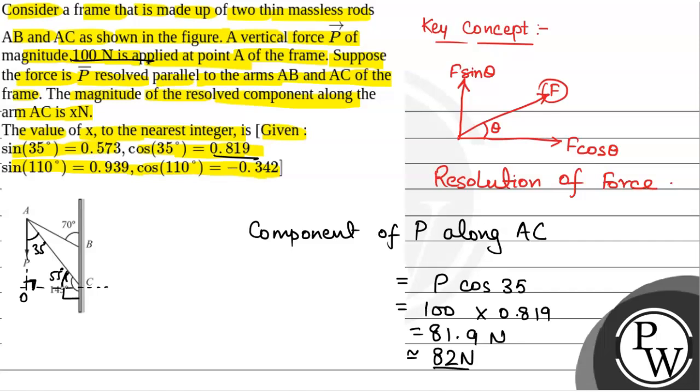So the value of X to the nearest integer is 82. This will be the final answer.